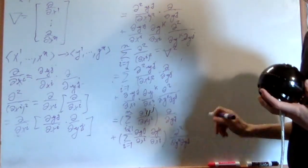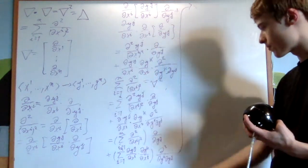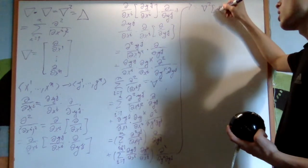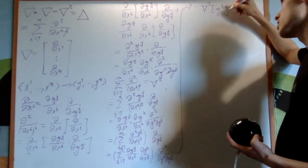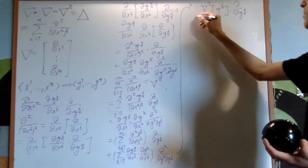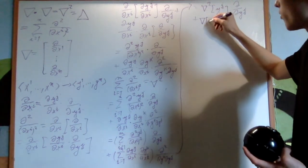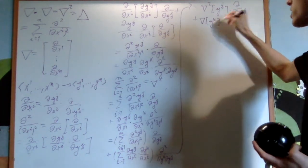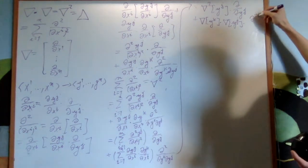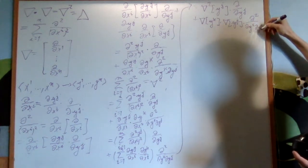But this - this right here - has a simpler nature to it. This sum right here is just the Laplacian applied to yj multiplied by del on del yj. And then similarly, this right here is just the del of yk dot product with the del of yj, and multiply by del squared on del yk del yj.